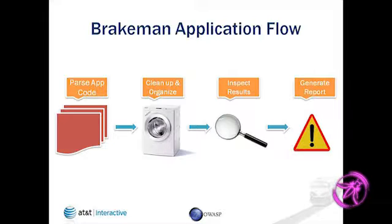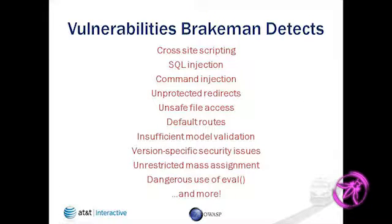The way Brakeman works: first it parses the code, does some cleanup and simplification of the abstract syntax tree, then looks at the results of that, runs multiple checks on it, and generates a report. Here's the list of vulnerabilities it detects — all the standard ones: cross-site scripting, SQL injection, command injection, redirects, file access, and basically most things you can detect statically. As new vulnerabilities come out for specific versions, we add those in, so it knows if you're running a specific version and flags relevant security problems.